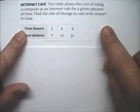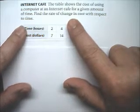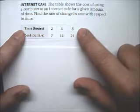In example 5, they ask us to find the rate of change. The rate of change is the slope, so we'll be figuring out the slope for this graph.